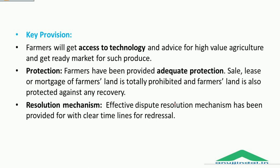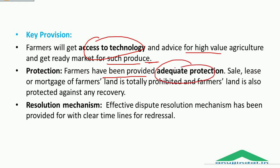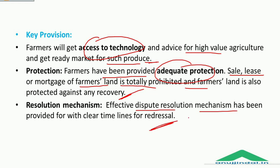Key provisions under this ordinance include: farmers get access to technology and advice for high-value agriculture and a ready market for such produce. Farmers have been provided adequate protection — sale, lease or mortgage of farmer's land is totally prohibited and farmer's land is also protected against any recovery. An effective dispute resolution mechanism has been provided with clear timelines for redressal.